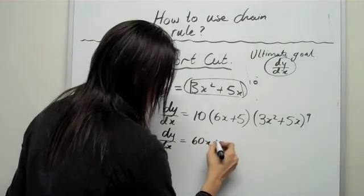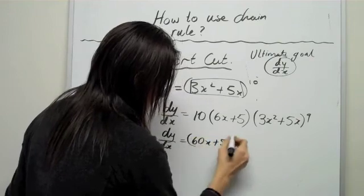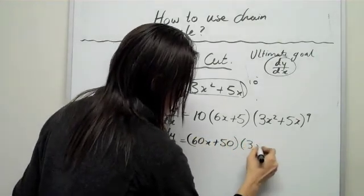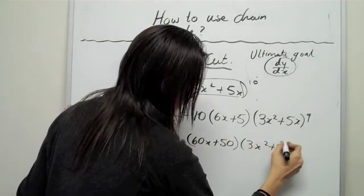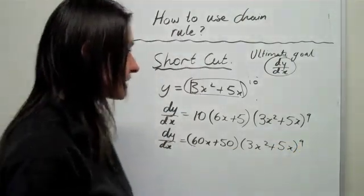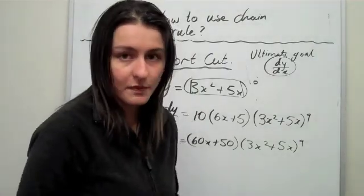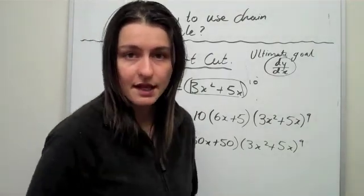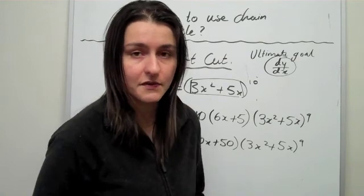So, now we've got a derivative in like just two steps. Can you see? So, 60x plus 50 times together to give you 3x squared plus 5x to the power of 9. And so, that is your derivative expression. So, I hope that you have learned something today. And I'll be going through more examples as we move along.